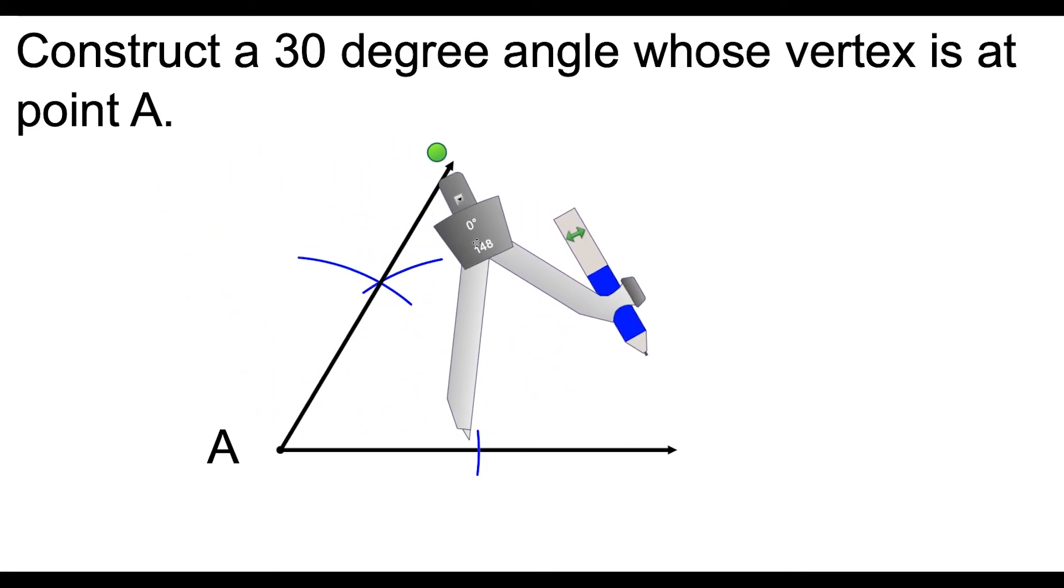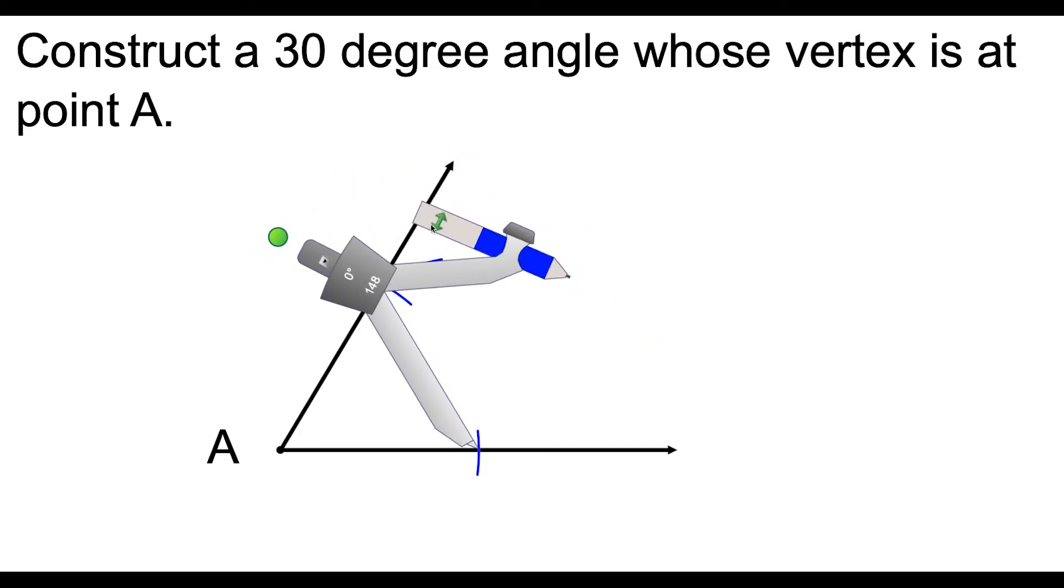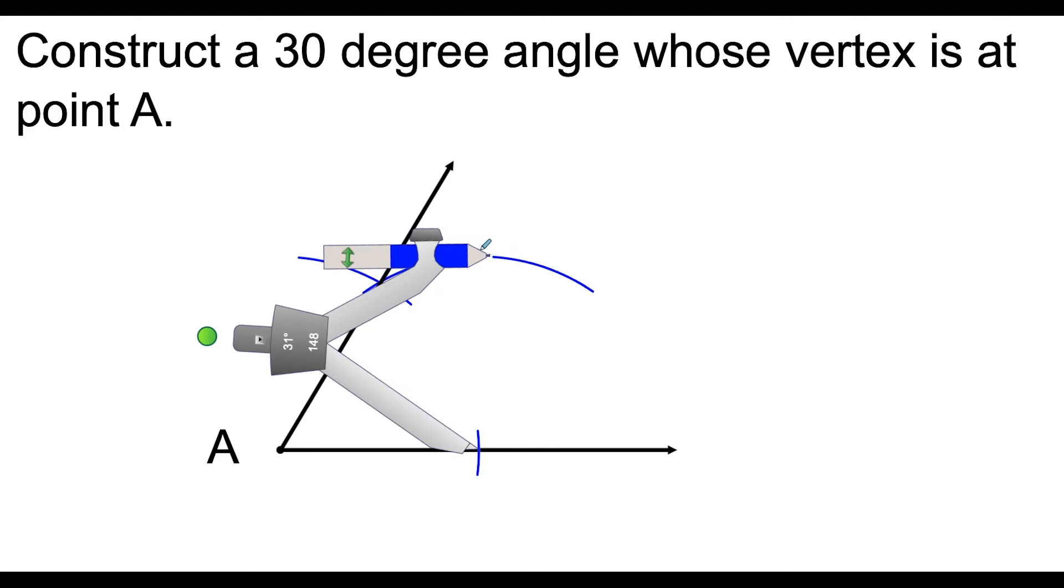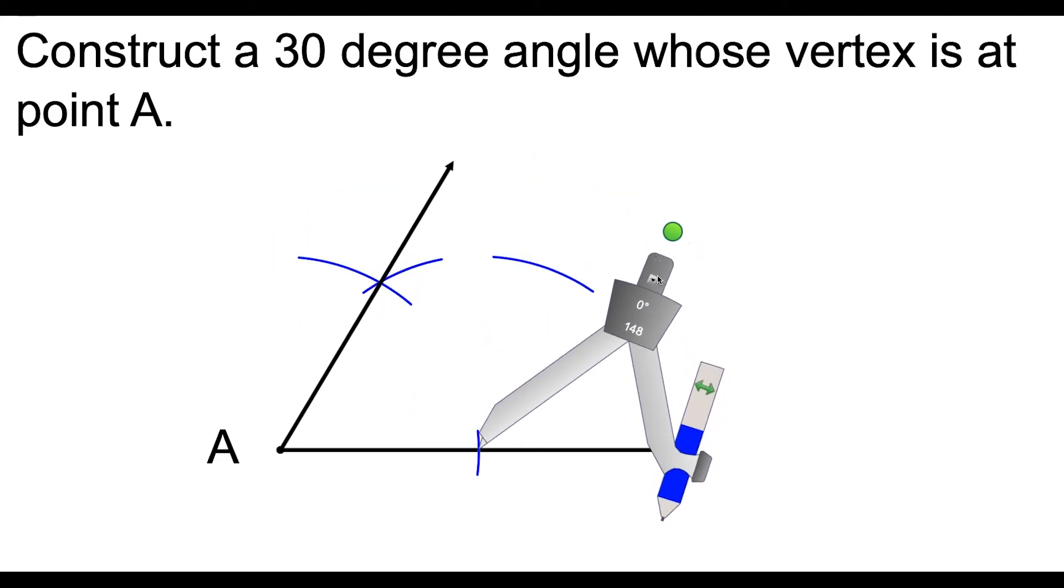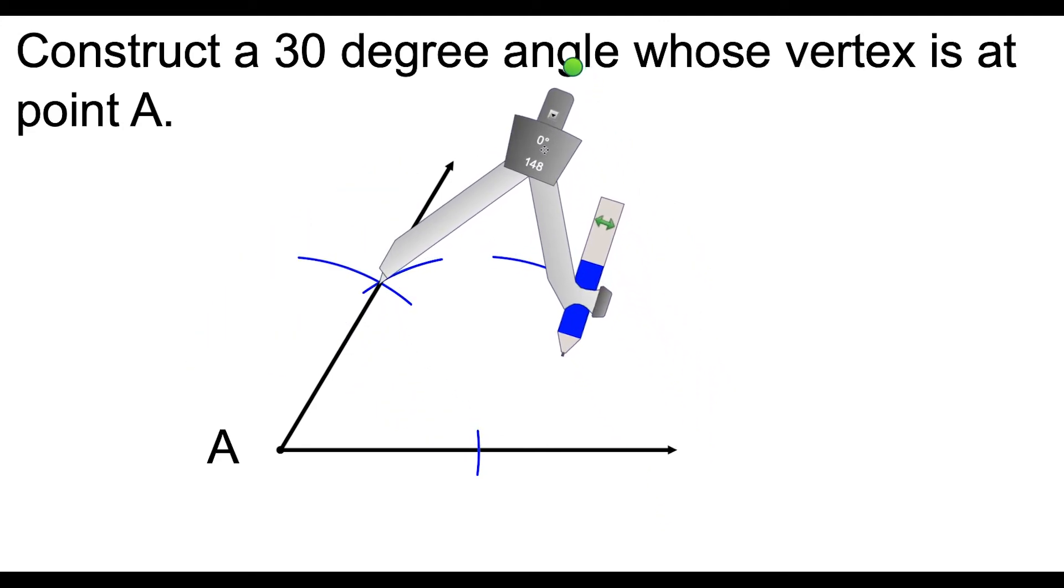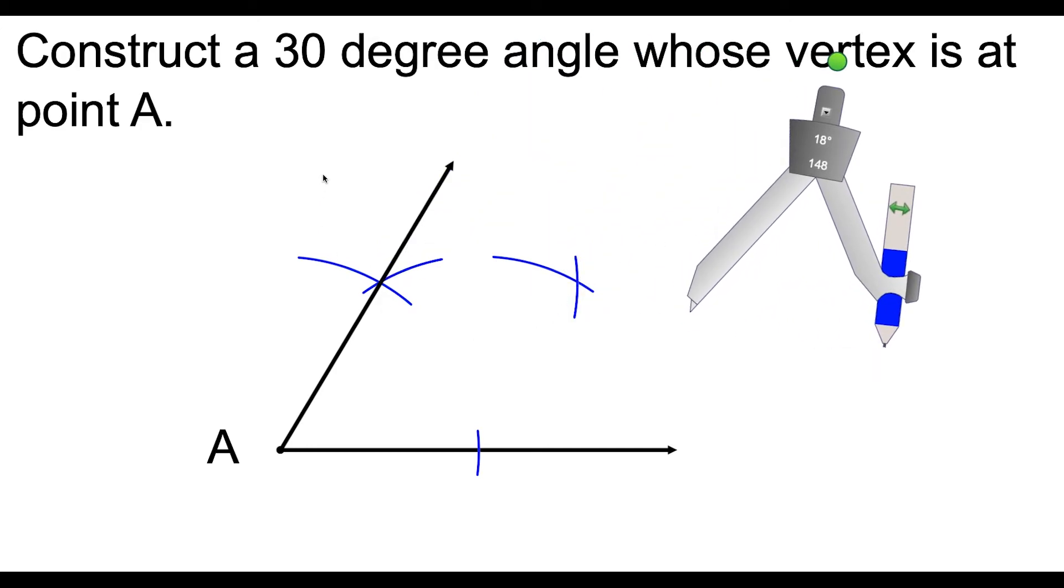So then the next stage is to move the compass over to this intersection point. And we're going to swing an arc like this in this neighborhood over here. So we swing the arc over here from this location. And then we move the compass over to this intersection point. And we swing another arc like this. And we're doing it in such a way so that these two arcs intersect at this point here.